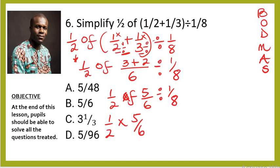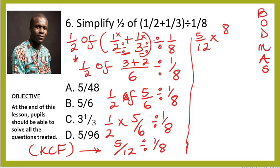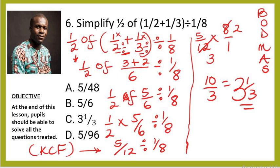Solving the 'of' first: (1/2) × (5/6) = 5/12. Now divide by 1/8. Using KCF — keep the first fraction, change division to multiplication, flip the second fraction: (5/12) × (8/1). Simplify: 4 into 8 is 2, 4 into 12 is 3. So 5 × 2 = 10, 3 × 1 = 3, giving 10/3 = 3 and 1/3. The final answer is C.